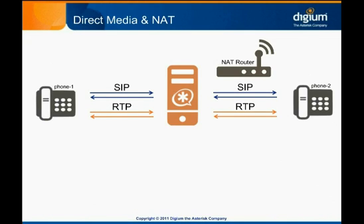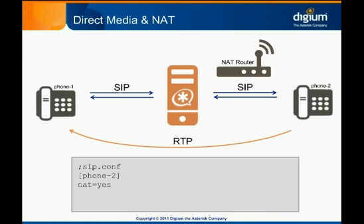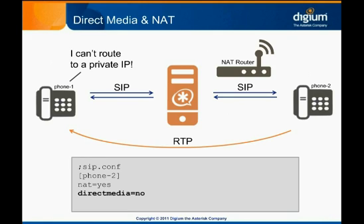Here we see a NAT router has been added. Asterisk is able to route SIP and RTP to phone 2 because we have enabled NAT equals yes in SIP.conf. However, by default, Asterisk will re-invite the media to flow directly between the two endpoints, which can cause problems because of the NAT router. In this illustration, phone 2 is able to send media to phone 1 because phone 1 has a public IP, but phone 1 is not able to send media to phone 2 because it cannot route to a private IP. The result is one-way audio. The default behavior can be modified using the direct media option in SIP.conf. Setting direct media equals no will prevent Asterisk from trying to re-invite the endpoints to send media directly, keeping the media stream flowing through Asterisk. If you experience one-way audio on a SIP call, setting direct media to no is something worth trying.